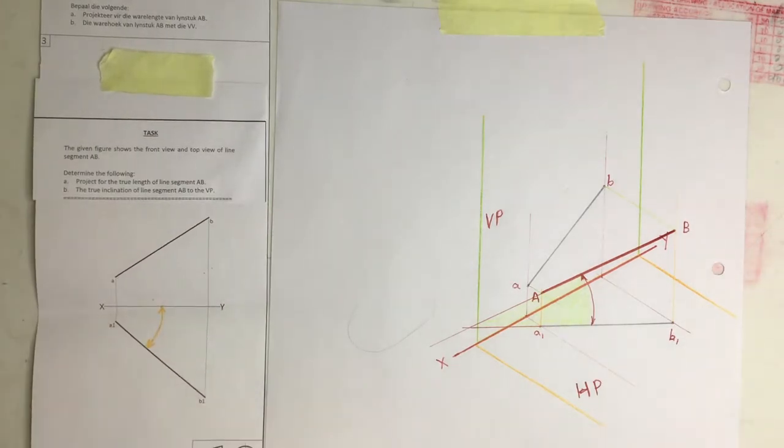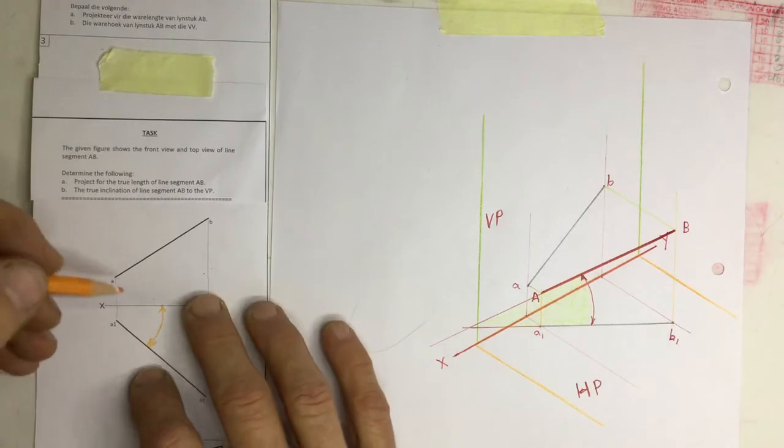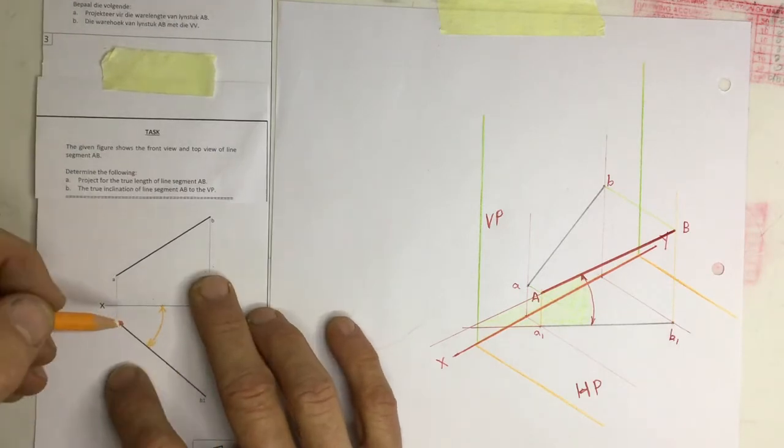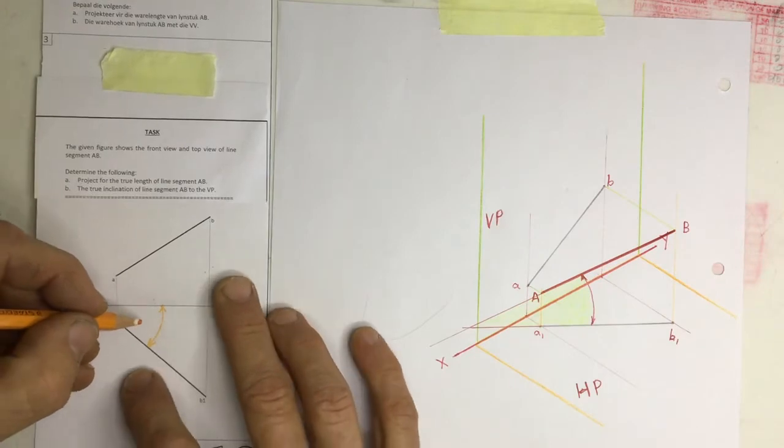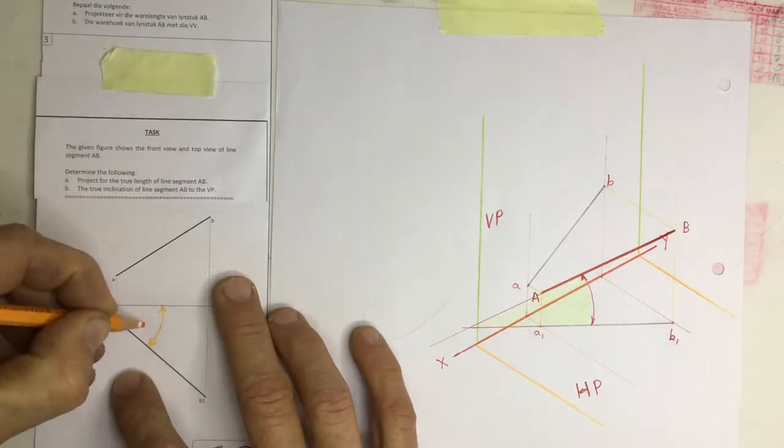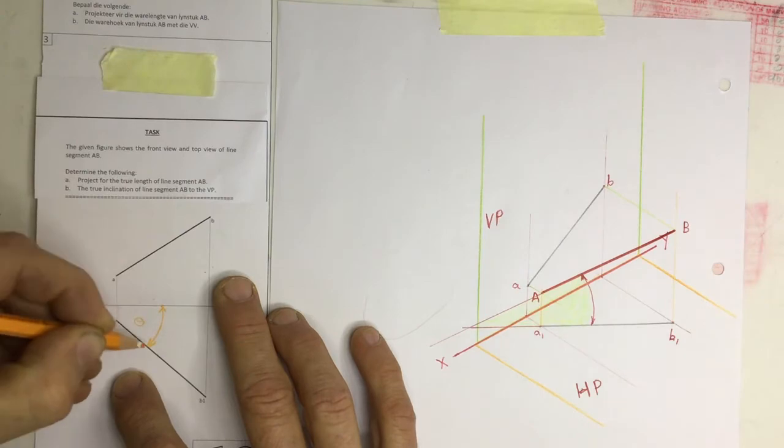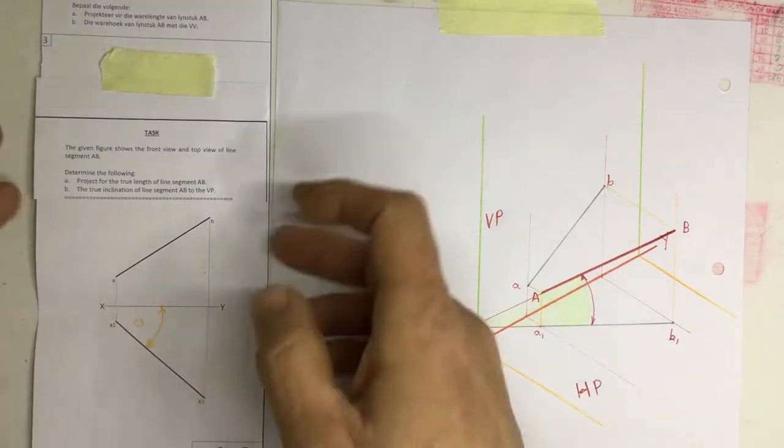And we need to figure out what the true length is and also the true angle of inclination to the vertical plane. I have got an angle over here, which is an angle to the vertical plane. If you look at that, there's my vertical plane and I've got an angle going to the vertical plane.